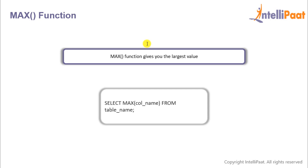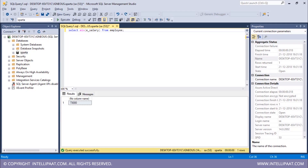Then we have the max function. The max function gives the largest value in a column. We give the select keyword, following which we give the max function, and inside the function we specify the name of the column from which we're supposed to get the maximum value.